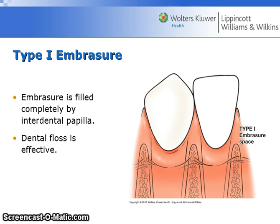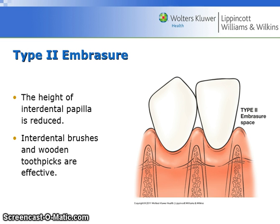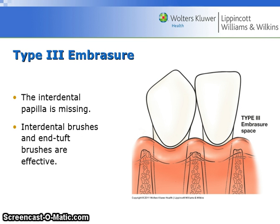A type 1 embrasure is filled completely by the interdental papilla; in these cases dental floss is very effective. A type 2 embrasure is one where the height of the interdental papilla is reduced; interdental brushes and wooden toothpicks are effective here. A type 3 embrasure is one where the interdental papilla is missing; interdental brushes and end-tuft brushes are effective.